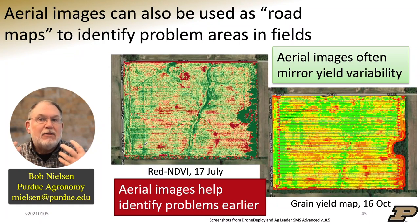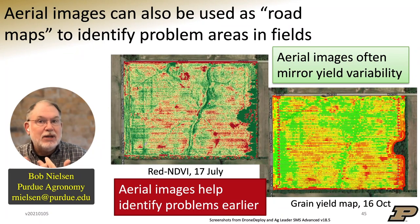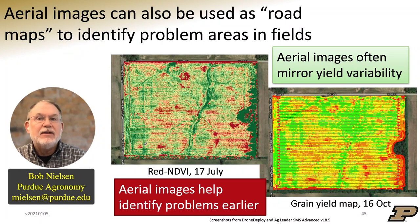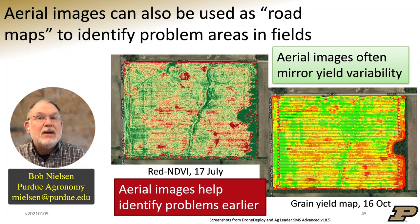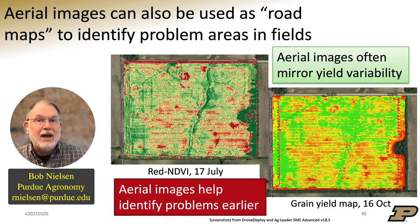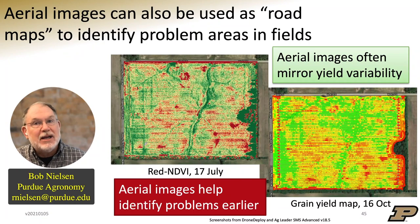You might say, well, I've already got yield maps — why do I need aerial imagery? The deal is that aerial imagery taken during the season tells you earlier when these problems are developing. And because it tells us earlier in the season where the problems are, it gives us an opportunity to visit the fields earlier and do crop diagnostics to determine the cause. It's much more efficient doing it that way than waiting until harvest and seeing the low-yielding areas on the yield monitor and asking what's going on — because at that point it's often simply too late to do an accurate diagnostic.